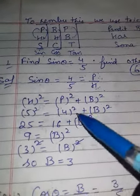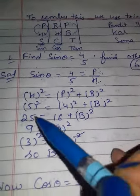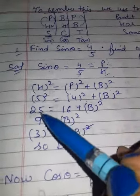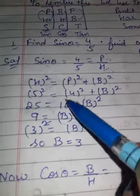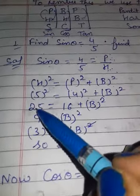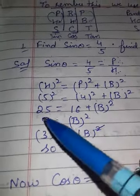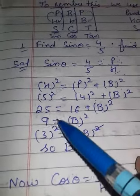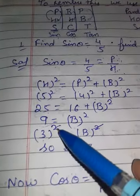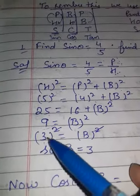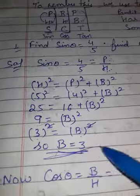H squared equals P squared plus B squared. H is your 5, P is your 4. You put them here and find B. Opening the squares: 25 minus 16 gives 9. You make it a square — 9 is 3 squared. Square cancels, so B is your 3.